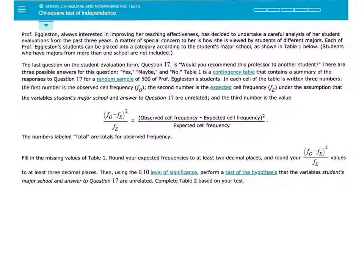The numbers labeled total are totals for observed frequency. Fill in the missing values of Table 1, round your expected frequencies to at least two decimal places, and round your observed cell frequency minus expected cell frequency quantity squared over expected cell frequency values to at least three decimal places. Then, using the 0.10 level of significance, perform a test of the hypothesis that the variables student's major school and answer to question 17 are unrelated. Complete Table 2 based on your test.